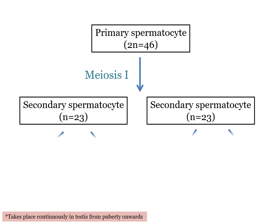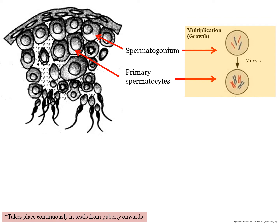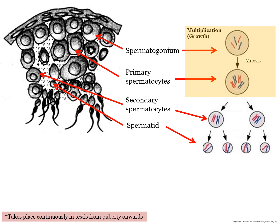Here is a clearer view to illustrate meiosis 1 and 2, from primary spermatocytes to the final haploid spermatid. Let's also look at another view, this time at the wall of the seminiferous tubules. Phase 2, maturation, is when the primary spermatocyte undergoes meiosis 1 and 2, producing spermatids.